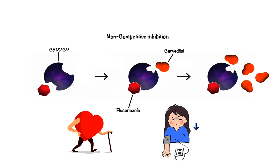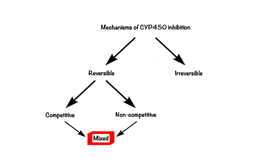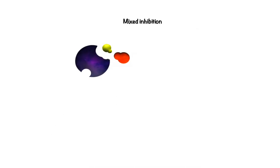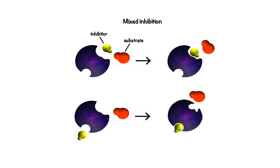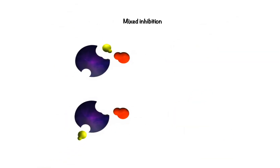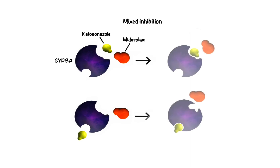In addition to competitive and non-competitive inhibition, we can have something called mixed inhibition. In this case, the inhibitor is capable of binding to either the enzyme's active site or to the enzyme's allosteric site, thus preventing substrate from binding. Mixed inhibitors are usually more potent than competitive or non-competitive inhibitors. An example of this type of inhibition is the drug-drug interaction between midazolam, which is a CYP3A substrate, and ketoconazole, which is a mixed CYP3A inhibitor. If ketoconazole occupies the active site or allosteric site, midazolam cannot be metabolized and accumulates in plasma, leading to an increased risk of side effects.